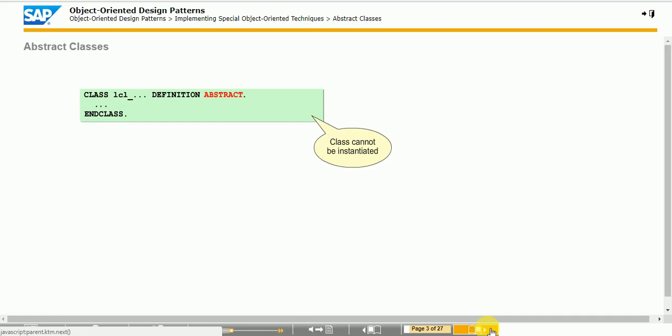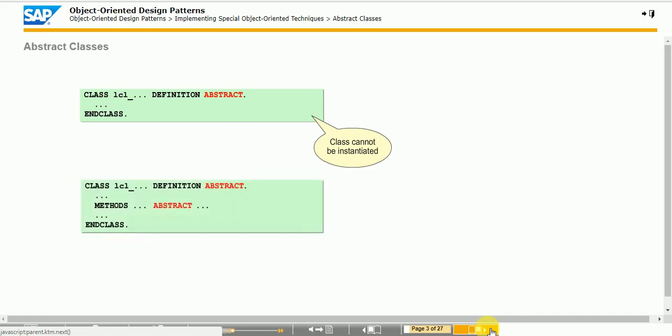In an abstract class, you can define abstract methods among other things. This means that the abstract method cannot be implemented in that class. Instead, it is implemented in a subclass. If the subclass is not abstract, the abstract methods must be redefined and implemented in the subclass for the first time.